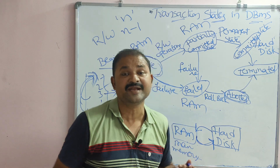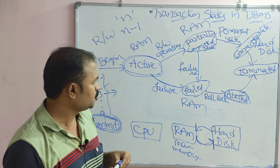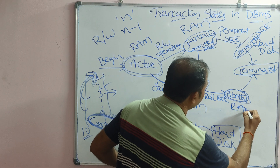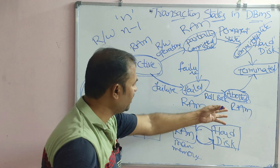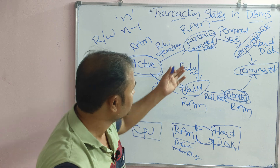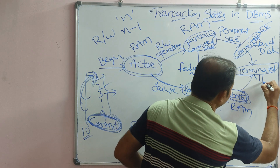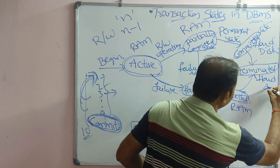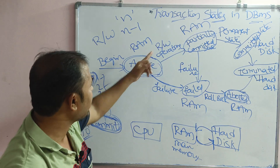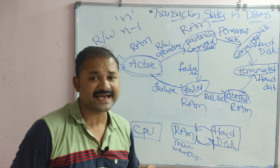After the rollback, the transaction will go to the terminated state to release resources. In the aborted state, the transaction is still in RAM because it is being re-executed. To summarize: in committed state and terminated state, the transaction is in hard disk. In all remaining states — active, partially committed, failed, and aborted — the transaction is in RAM.